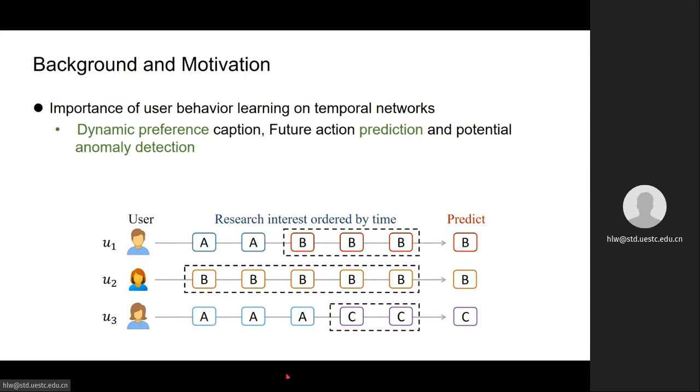Let's take this image as an example. This image shows three users' behavior in temporal collaboration network. By learning each user's behavior pattern, we can predict who he or she is going to collaborate with in the next year, as well as inferring users' research interest.